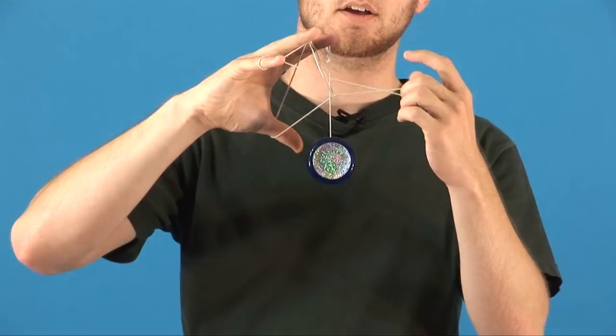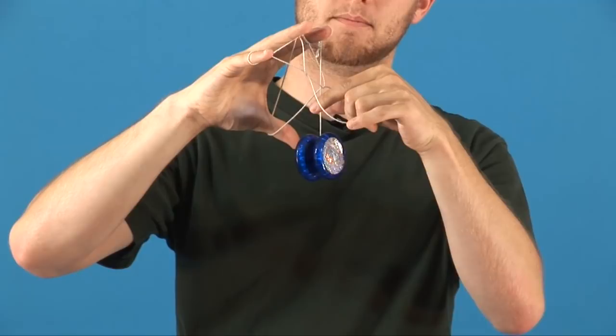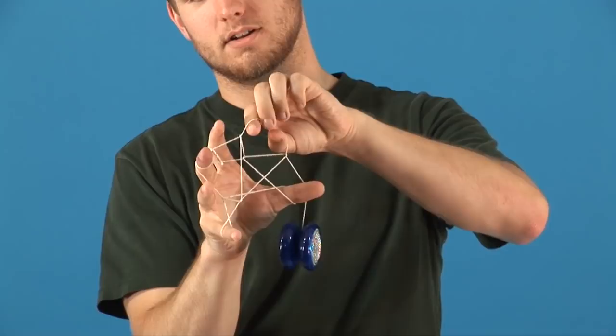From here you're going to take your pointer and thumb from your non-yo-yo hand, reach through the hole in front of them and grab the yo-yo string. When you bring your hand to the side and turn it, it's going to make Darth Vader.